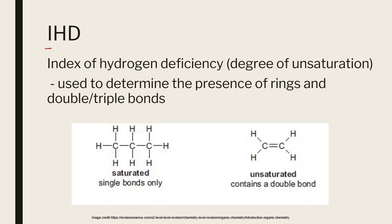First up, we're going to look at IHD — index of hydrogen deficiency. Basically, we're looking at how unsaturated a molecule is: saturation versus unsaturation. We're talking about the hydrogens that are in the molecule.